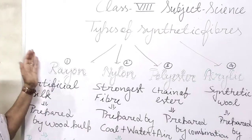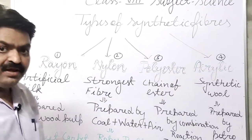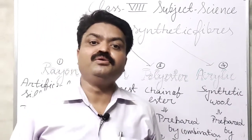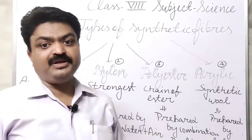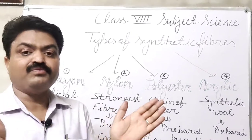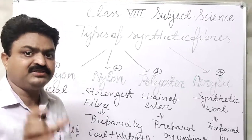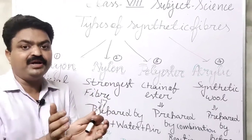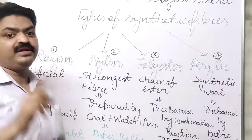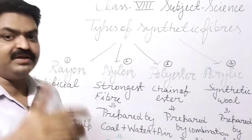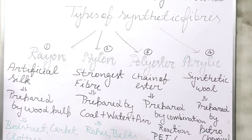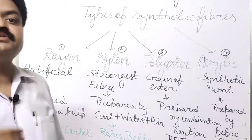The first synthetic fiber is rayon. Rayon is a synthetic fiber and it is prepared from wood pulp. Wood pulp is the soft part of the wood, found in the stem of trees — at the middle of the stem. With the help of that wood pulp, this rayon synthetic fiber is prepared through chemical reactions in the industry.